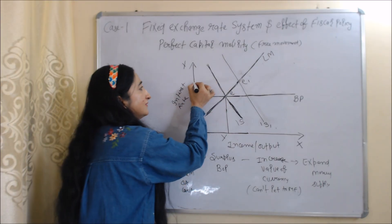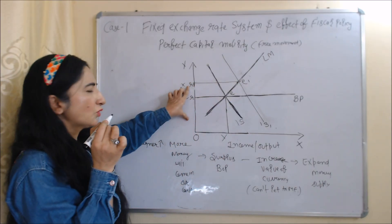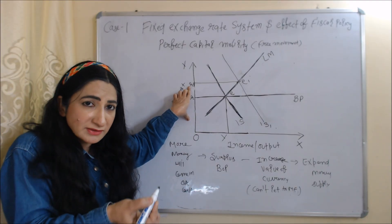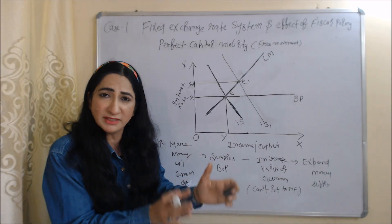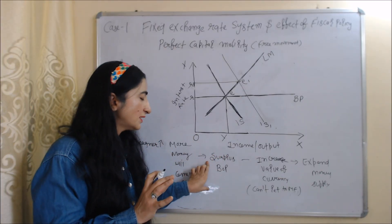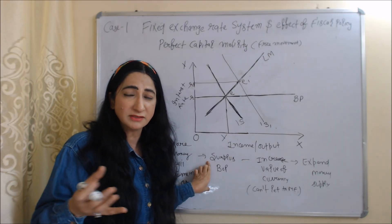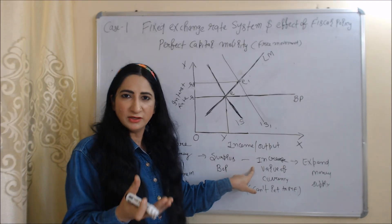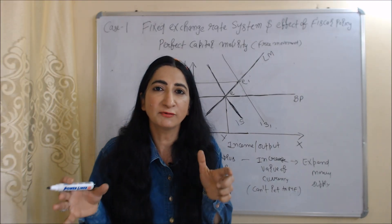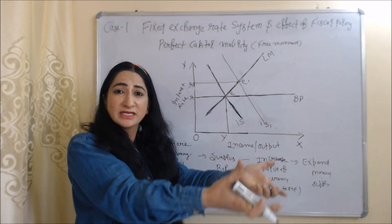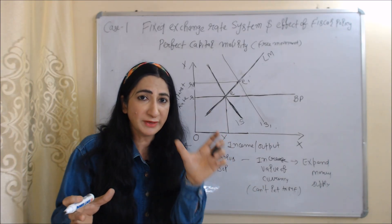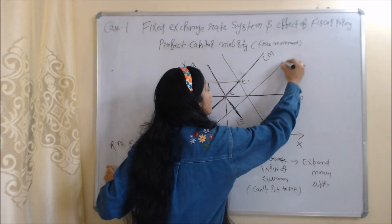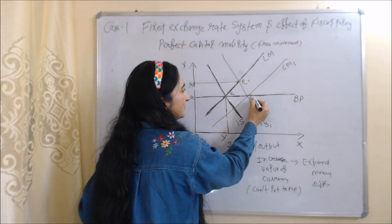E1 is our new equilibrium point. At this point, our interest rate will increase from OR to OR1. At a higher interest rate, foreigners will invest in our country, meaning more money is coming in. As a result, our balance of payment will become surplus — surplus means money coming into the country is more than money going out. Surplus balance of payment can increase our currency value, but since we are working under the fixed exchange rate system, the central bank will expand money supply to maintain it. This causes our LM curve to shift from LM to LM1, and our new equilibrium point is E2.